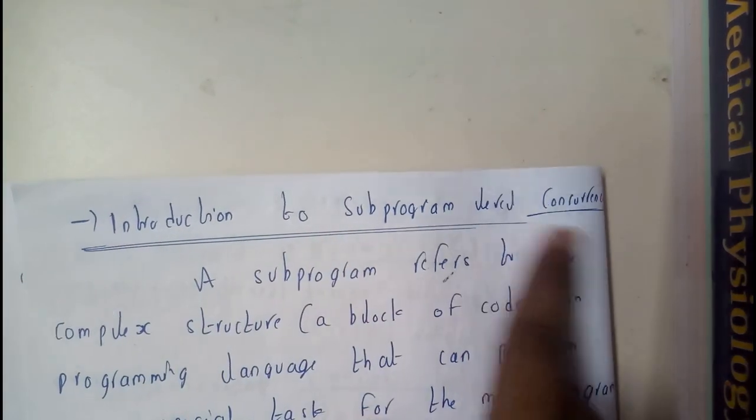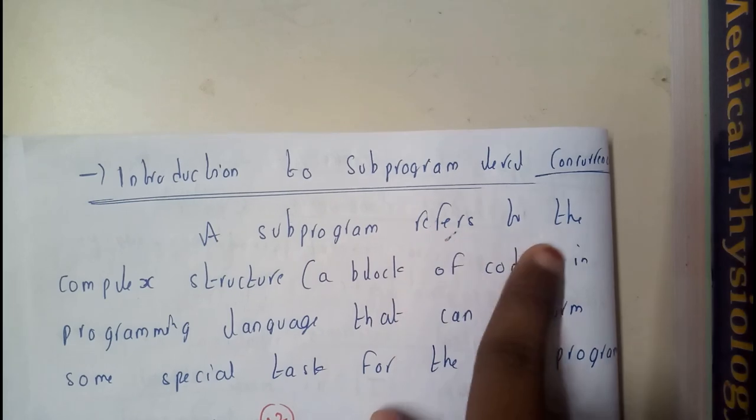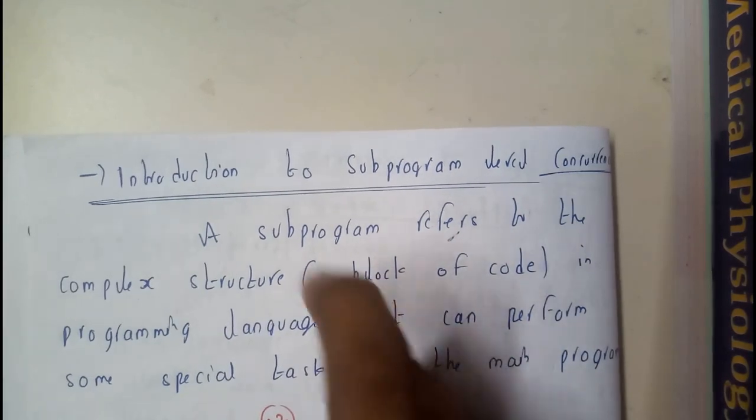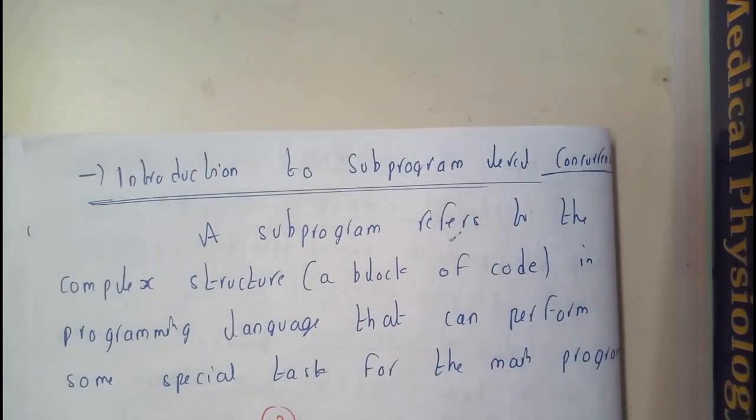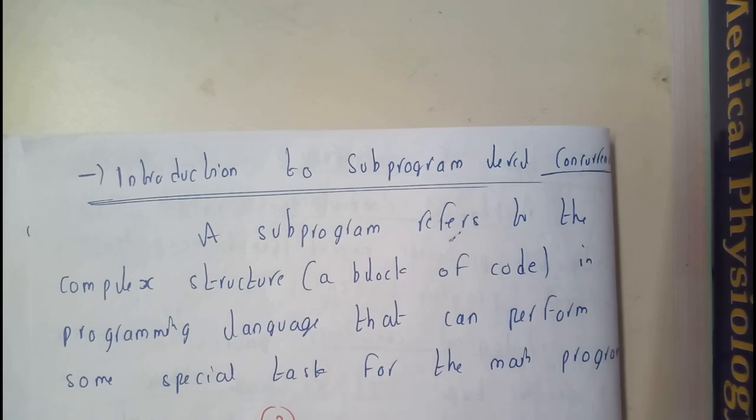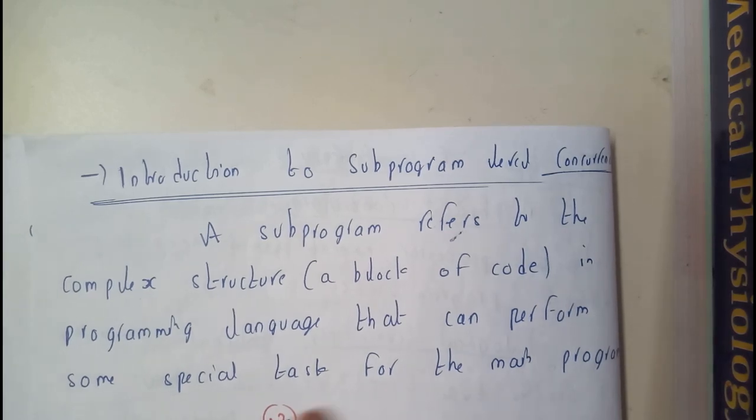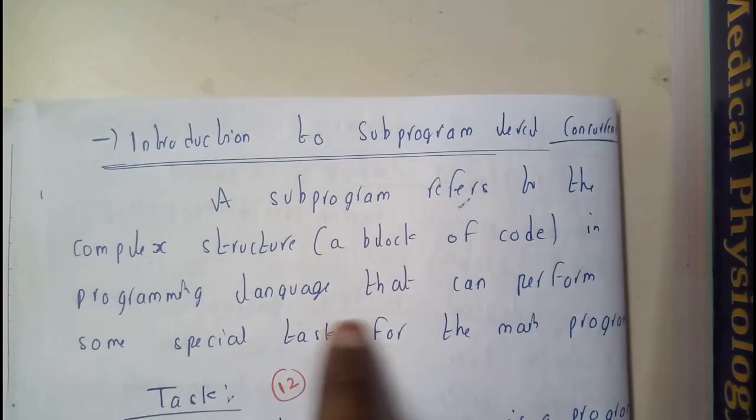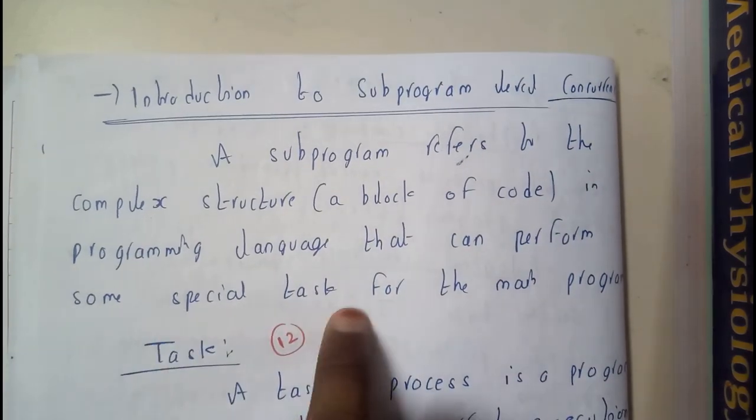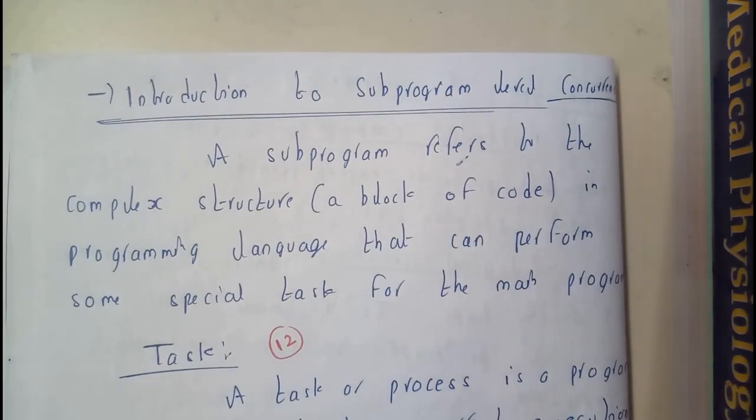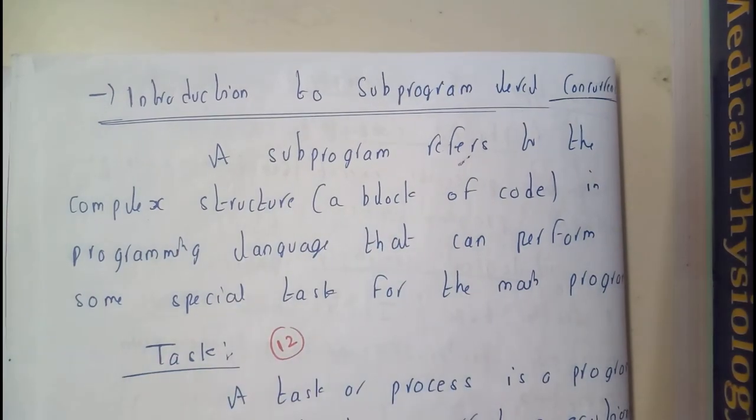Introduction to subprogram level concurrency: A subprogram refers to the complex structure, that is nothing but a block of code in a programming language that can perform some special task for the main program. In the next tutorial we will be repeating this also and we will be going through tasks.